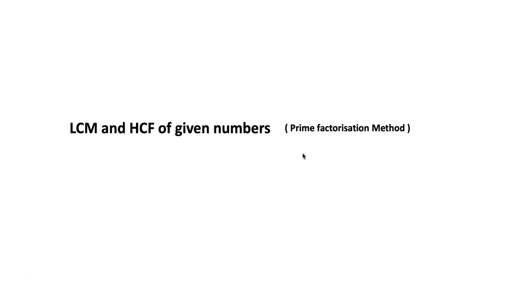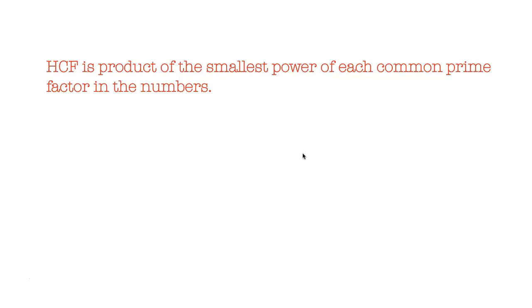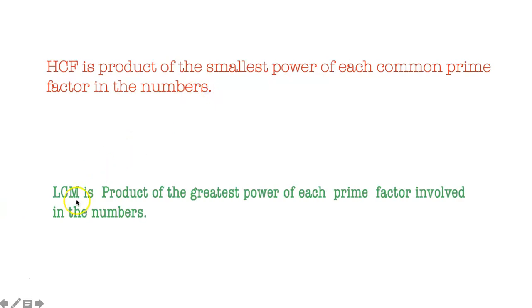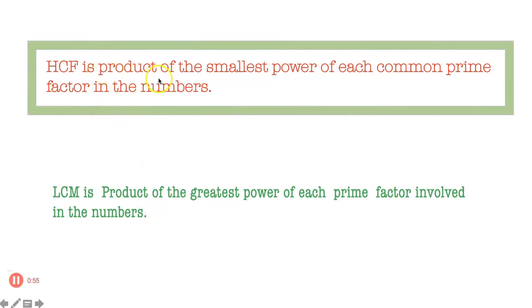We will find the LCM and HCF of given numbers using the prime factorization method. HCF is the product of the smallest power of each common prime factor in the numbers. LCM is the product of the greatest power of each prime factor involved in the numbers.